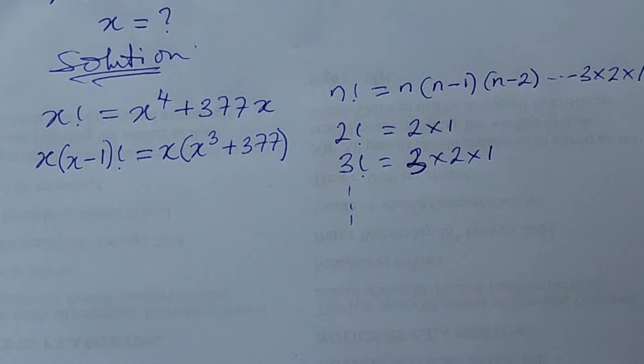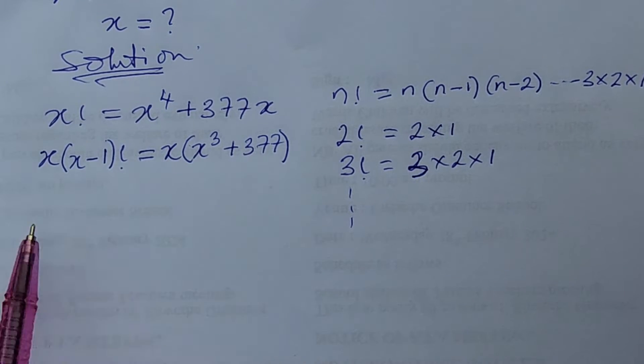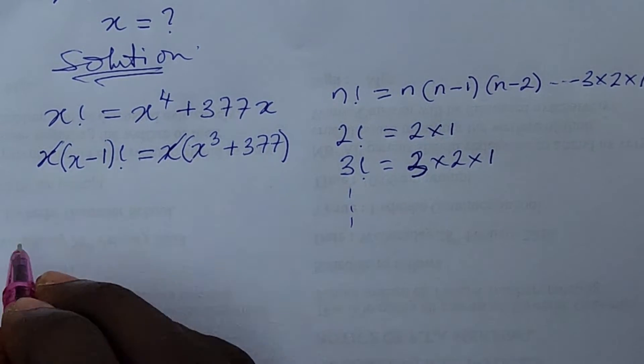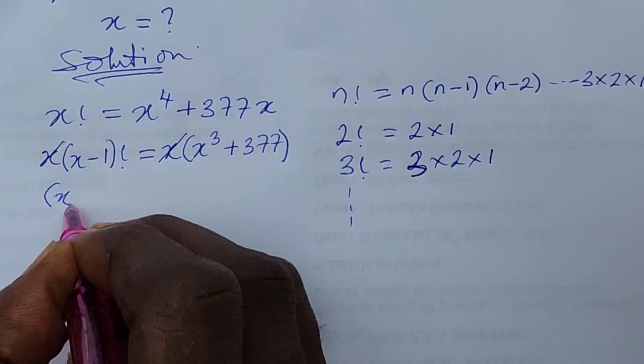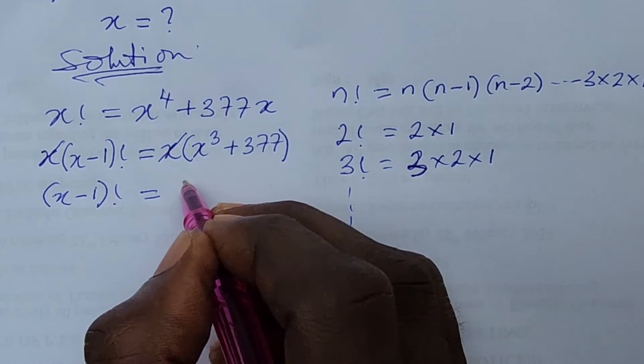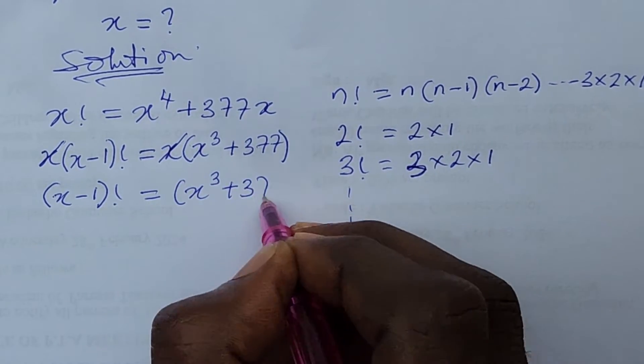Alright so at this point what do we do? We discover that here we are having x here we are having x. So x will cancel out x from this other side. So we have our special to be your x minus 1 factorial. This is equal to bracket x to the power of 3 plus 377.